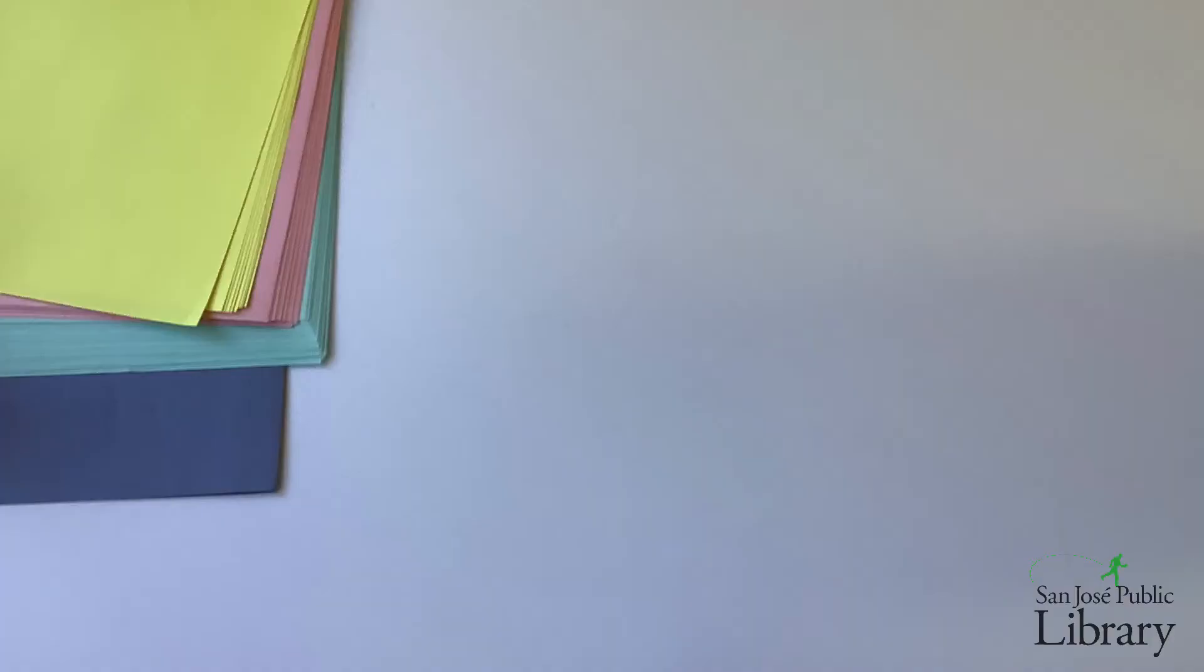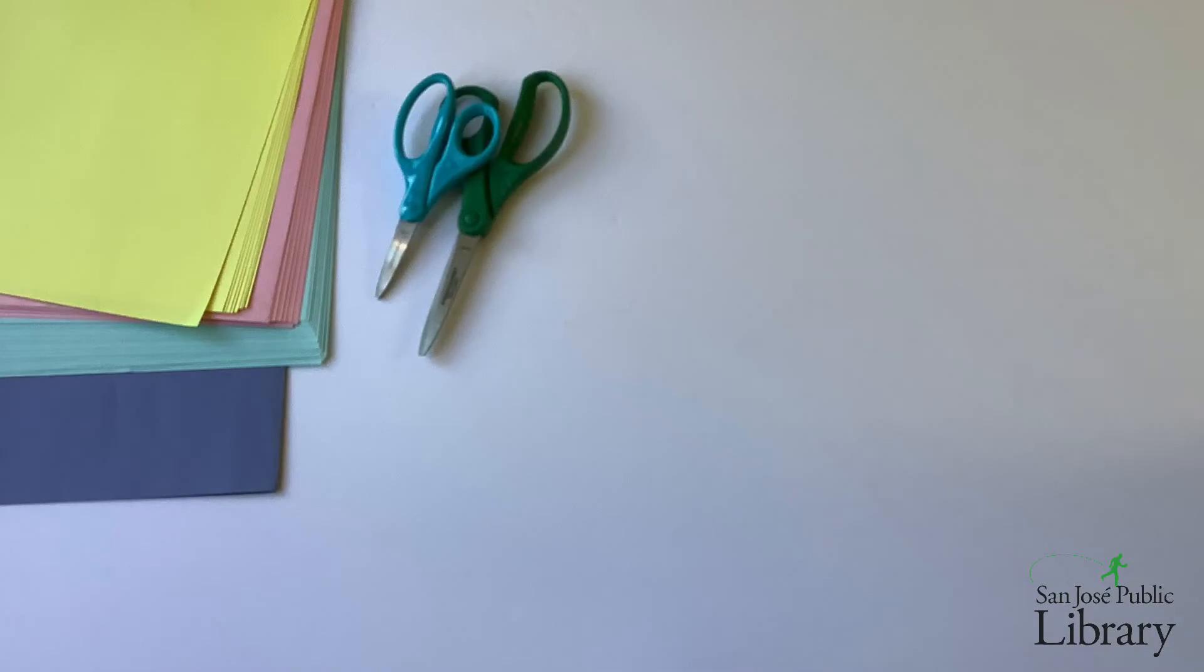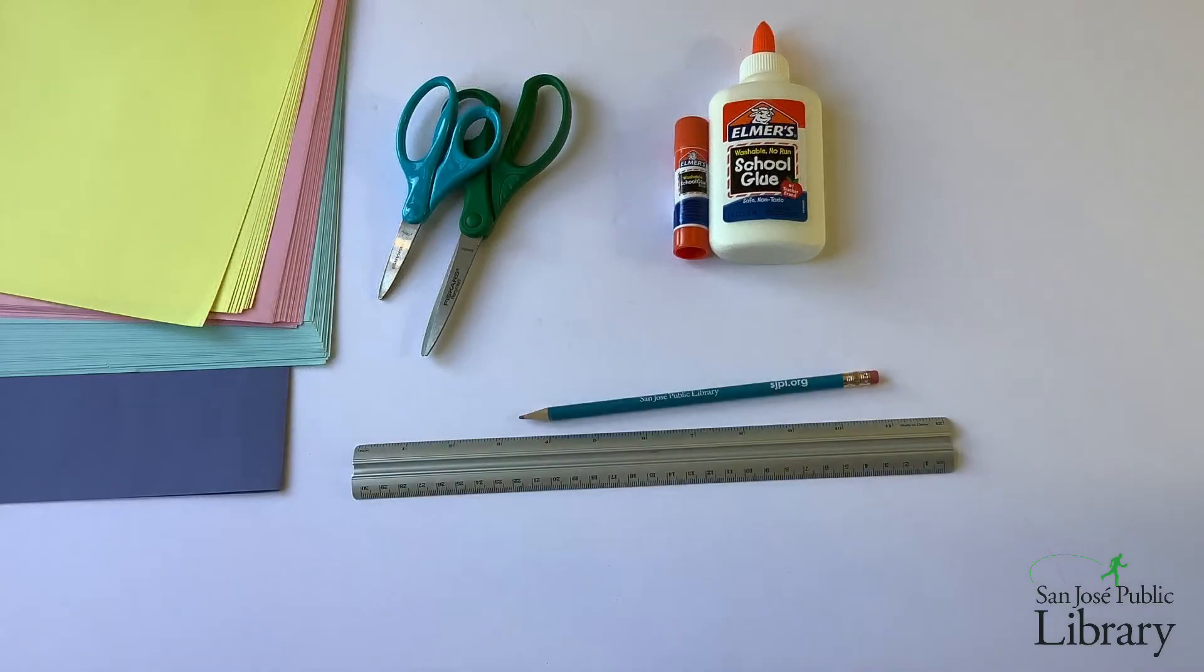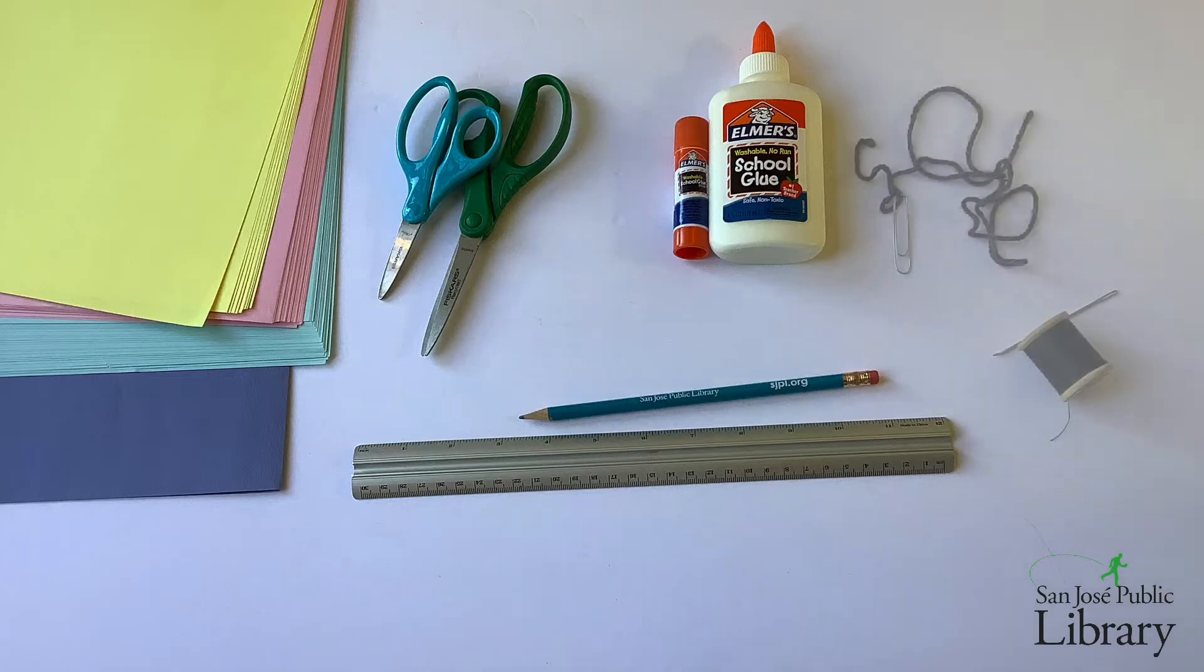For today's activity you'll need some paper cut into a square, scissors, glue or glue stick, and optionally a ruler and pencil so that you can make your cuts more even. You'll also need something to suspend your wind catcher with.